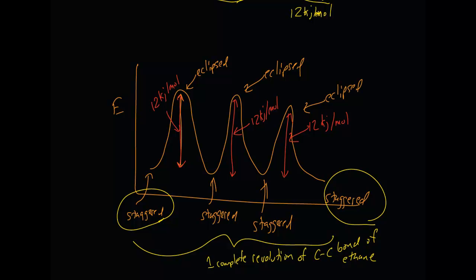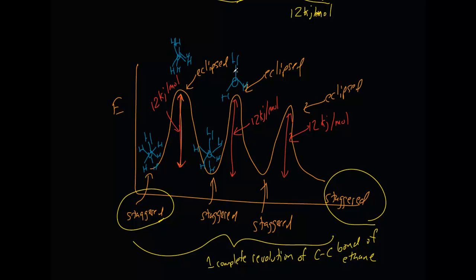Sometimes you might want to draw the Newman projections at each point on the diagram. You draw a staggered projection — the peace symbol with an inverted one behind it — and I like to keep the front carbon in the same position and just rotate the rear carbon to maintain consistency. The eclipsed projection has these guys peeking out a little bit, and the staggered projection is the same peace symbol in front with an inverted one in the back. I draw this identical picture for each eclipsed and staggered position.